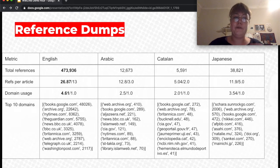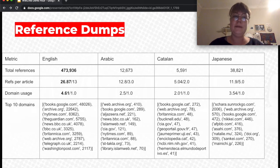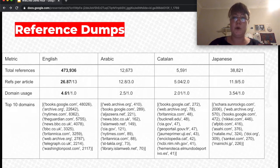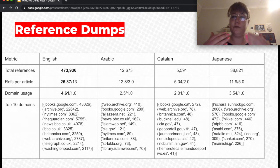More interesting is the domain usage: how often has one domain on average been used across articles. In English, for example, the same domain is used on average 4.6 times across 4.6 articles. The median for all languages is one. This suggests there is room for improvement when it comes to reusing already existing reliable sources on Wikipedia.